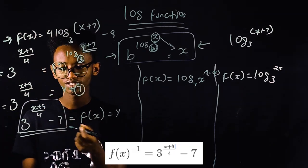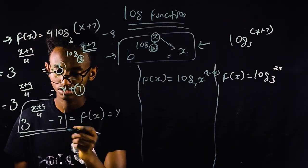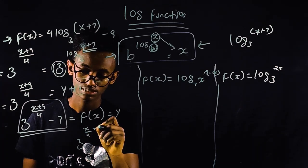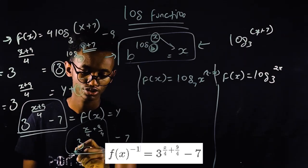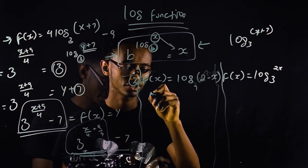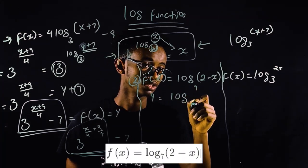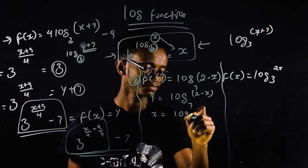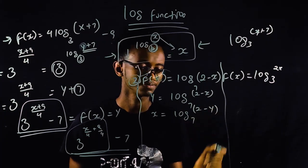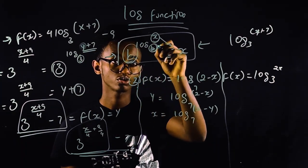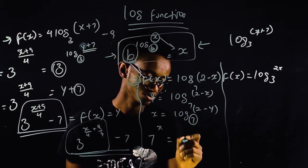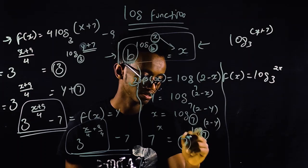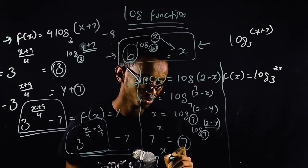3 to the power of x plus 9 over 4 minus 7 is the result. How do we solve the power of the base? The power of the base is 7. The power of x equals 7. The power of log 2 minus y in the base 7 is 7.